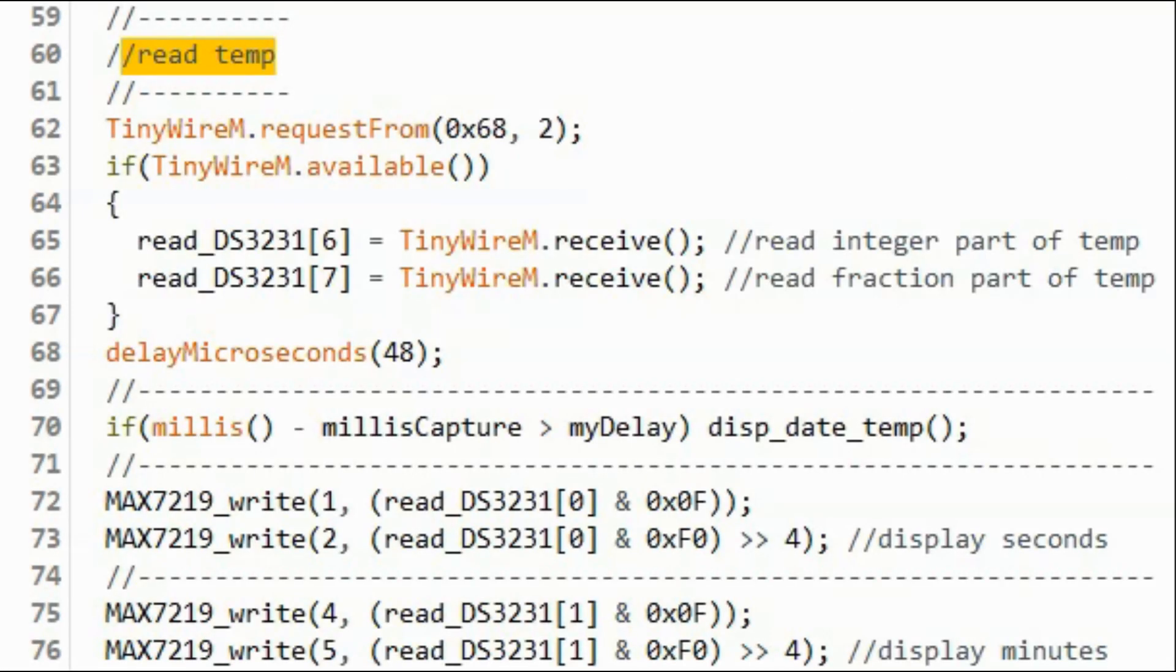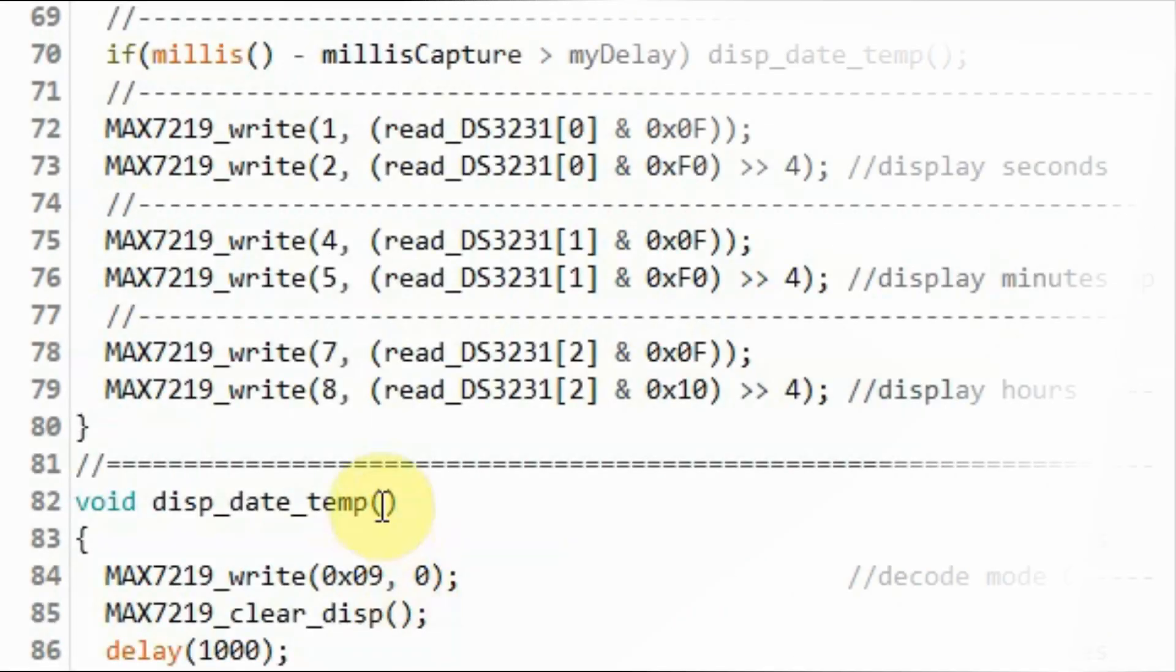Inside the loop function, after reading time and date, we read the temperature from the real-time clock. First, we read the integer part, and then we read the fraction part of temperature.